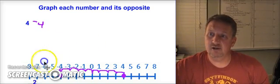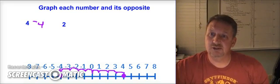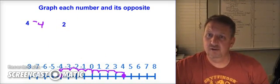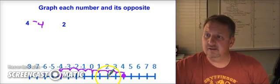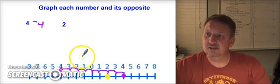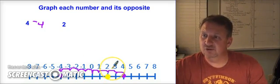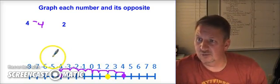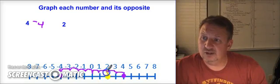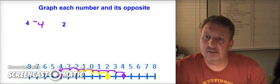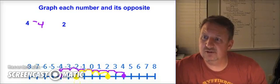Next, let's look at two. Two is two places to the right of zero, so its opposite is going to be two places to the left. Counting one, two to the right for positive two, then one, two to the left from zero — the opposite of positive two is negative two.